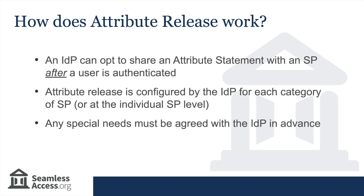For example, research collaborations involving researchers across different institutions would typically share some personal data, such as a name and email address. Institutional workflows that require users to confirm their institutional affiliation with third parties may involve scenarios where it is appropriate to share a much broader range of user data, such as authorizing the use of institutional funds for open access publishing fees. With library resources, our recommendation is for a much more limited set of attributes. Because the identity provider is in control, any special needs for attributes need to be agreed in advance, so that attribute release can be configured appropriately.